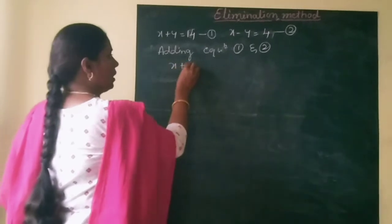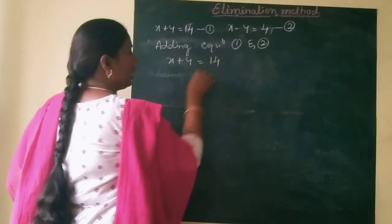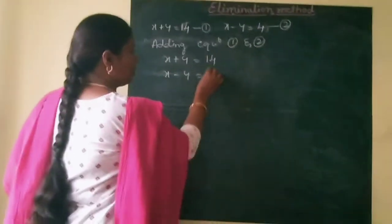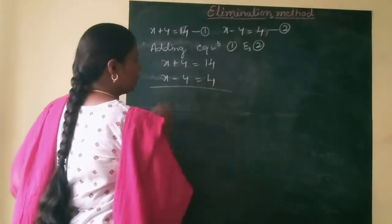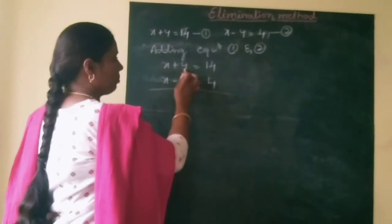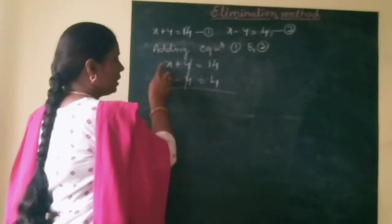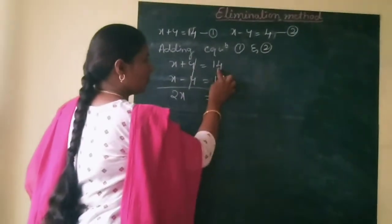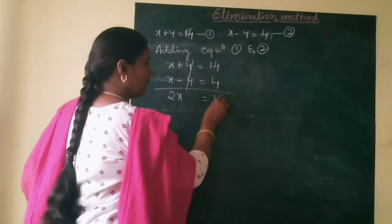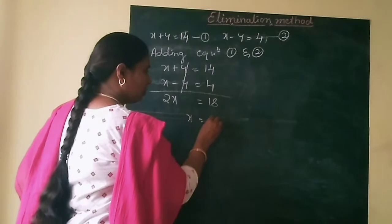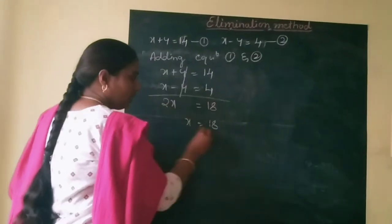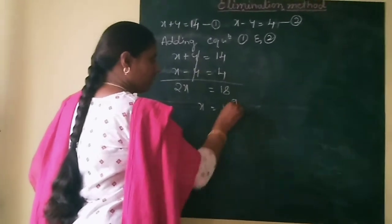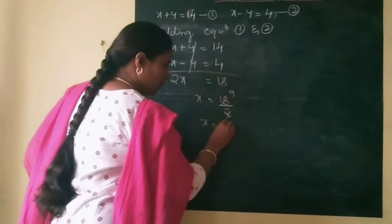Now we add both equations: x plus y is equal to 14, and x minus y is equal to 4. The plus y and minus y cancel out. So x plus x gives 2x, equal to 14 plus 4, which is 18. Dividing both sides by 2, x is equal to 9.